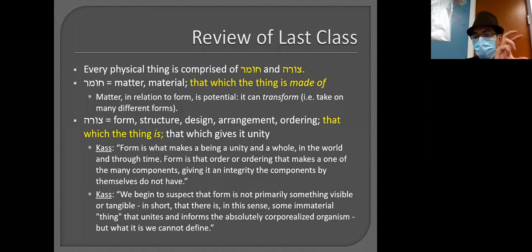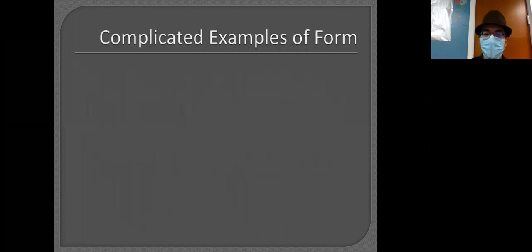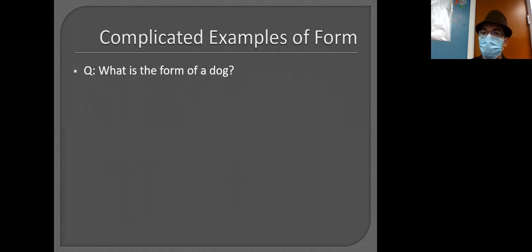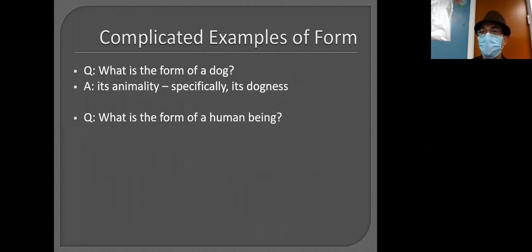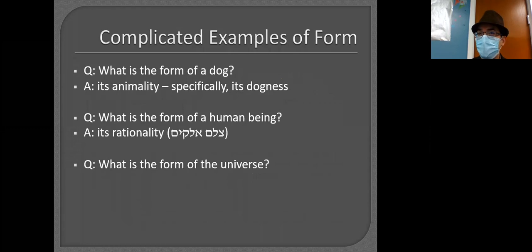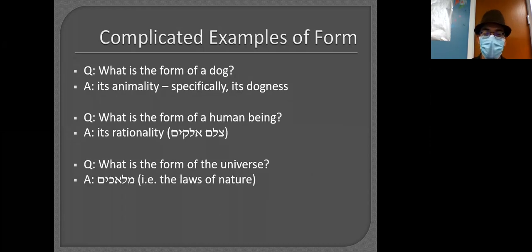It's hard to actually define the form, that's why we have to use weird words like 'shoe-ness' or 'phone-ness.' The form of a dog is its animality or dog-ness. The form of a human being is what makes you human — your intellectuality and rationality. And the form of the universe? Nature — or malachim. Malachim is the form of the universe.